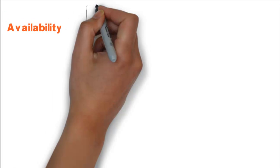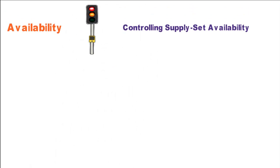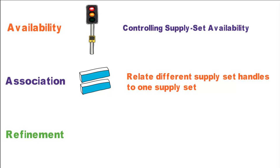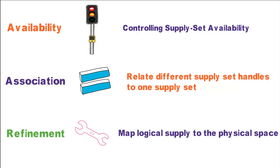There are three important concepts of supply sets: availability, controlling the availability of supply sets; association, associating a supply set or a handle to another supply set; and refinement, mapping a supply set function to the actual supply net. First, let's talk about availability.